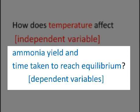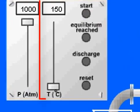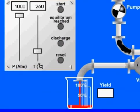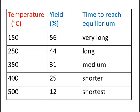ammonia yield and time taken to reach equilibrium. So we alter temperature, the independent variable, and we measure the two dependent variables and see what trend we can find.